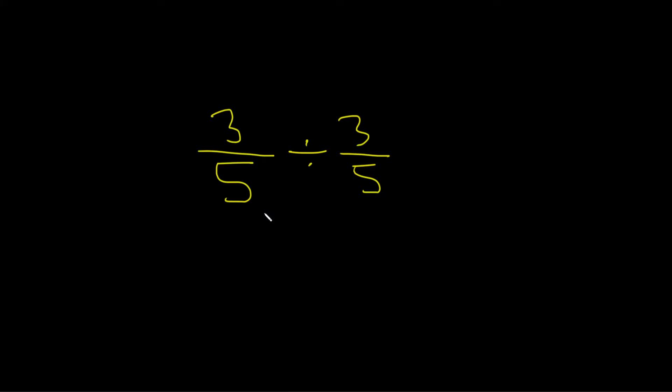The very first step when dividing fractions is to multiply by the reciprocal. So we'll start by writing down our 3 over 5, and we'll change this division symbol to a times.